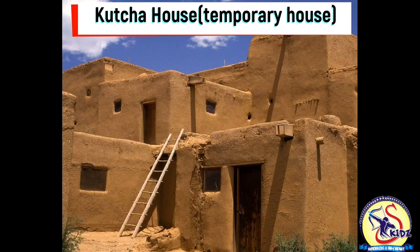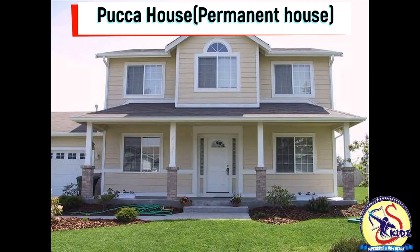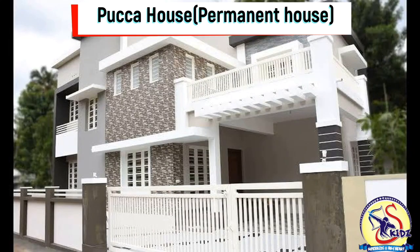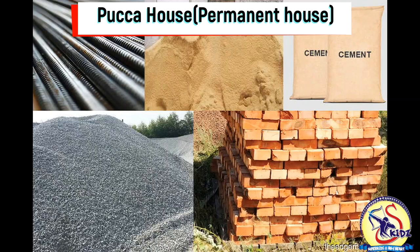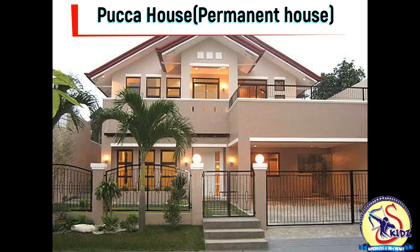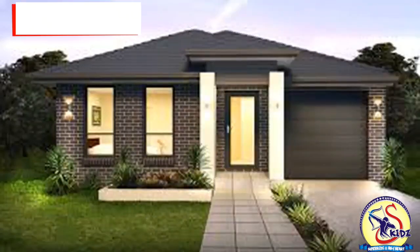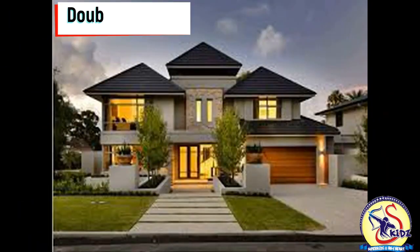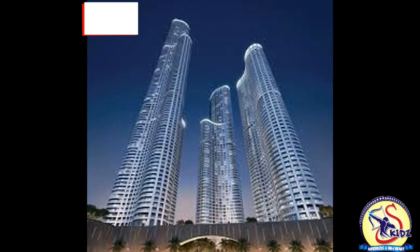Second is the Paka house, also called a permanent house. A Paka house is made up of bricks, iron rods, and cement. It is a strong house. Permanent houses also have many types, like single-story, double-story buildings, bungalows, and in big cities we see tall buildings — those are called towers.